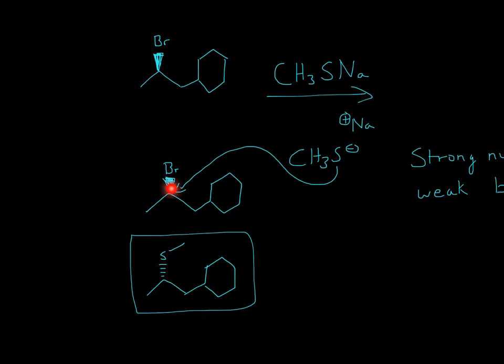And that's why the wedge becomes a dash. So it'll attack from behind and then become a dash, and then you have S and then CH3. So I hope that helped, and thanks for watching.